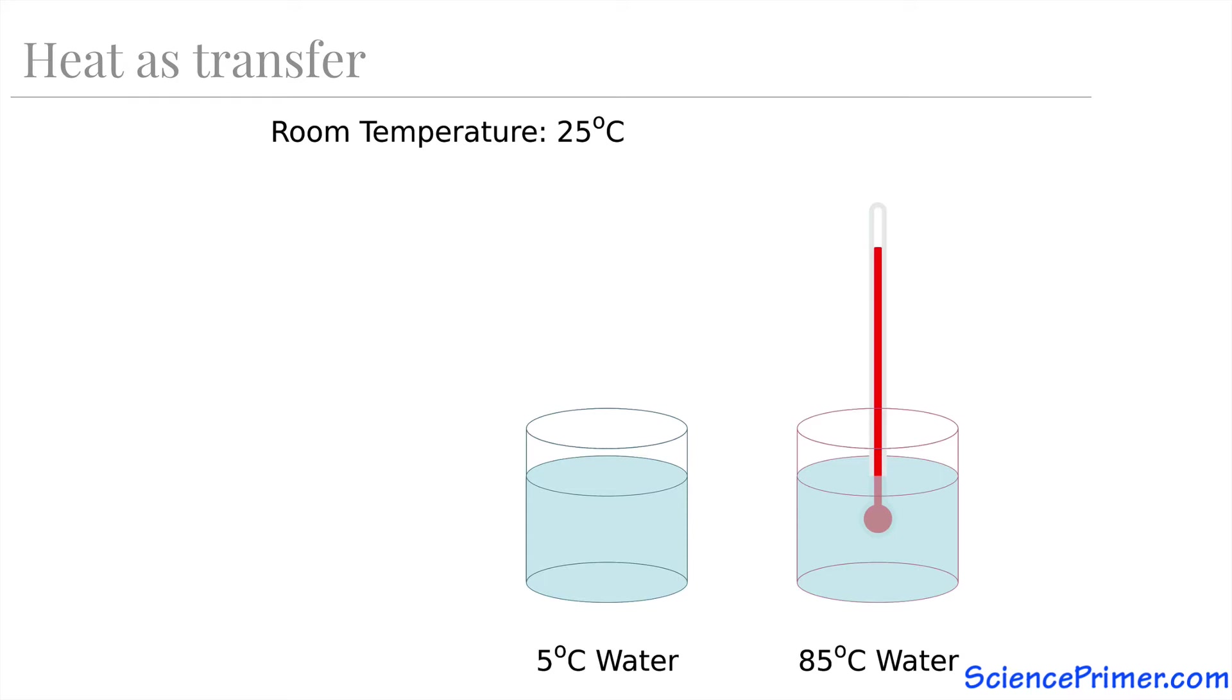Notice I chose my words carefully when I discussed moving the thermometer between the room and the water at different temperatures. This is because heat only flows one way. It flows from things with higher temperature to things with lower temperature. So when the thermometer was placed in the cold water, heat flowed from the thermometer to the water. And when the thermometer was placed in the hot water, heat flowed from the water to the thermometer. Heat stops flowing once the two objects reach the same temperature. In these cases, it stops when the liquid in the thermometers reach either 5 or 85 degrees, the same temperature as the water in each container.